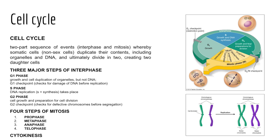Interphase has a few steps: G1 or growth phase, then the S phase, and G2. G1, or gap phase one, is where the cell duplicates most of its organelles — not its DNA at this point. At the end of G1, there is a G1 checkpoint where DNA is examined to ensure that when it enters the S phase, it isn't about to replicate any damaged DNA. If DNA looks good and undamaged, we proceed into the S phase — named for synthesis — where DNA replication occurs, resulting in two sets of genetic material.